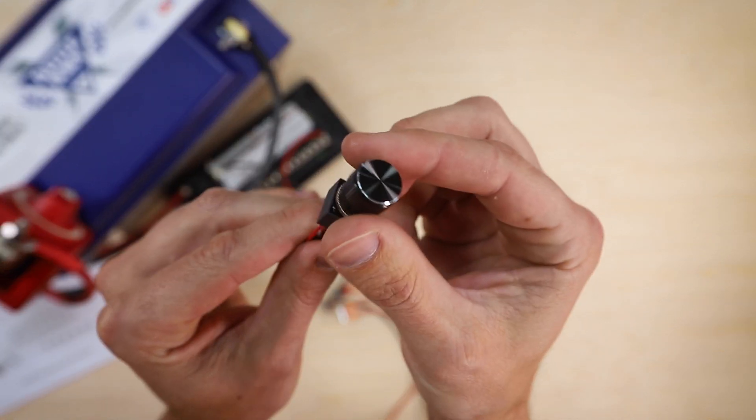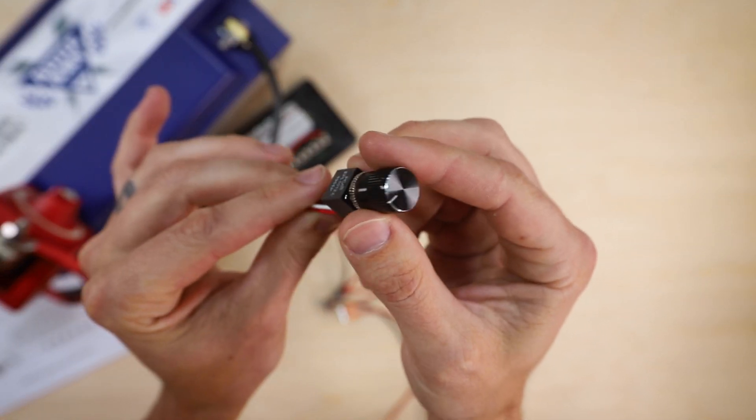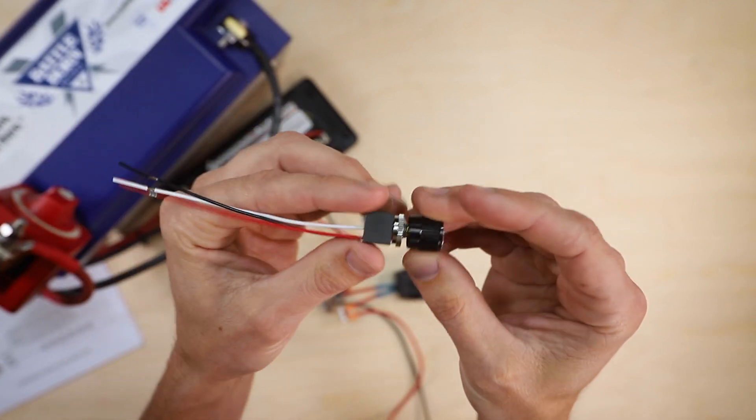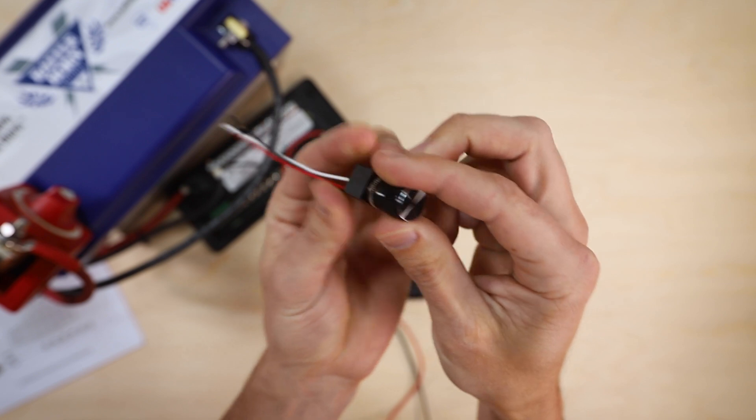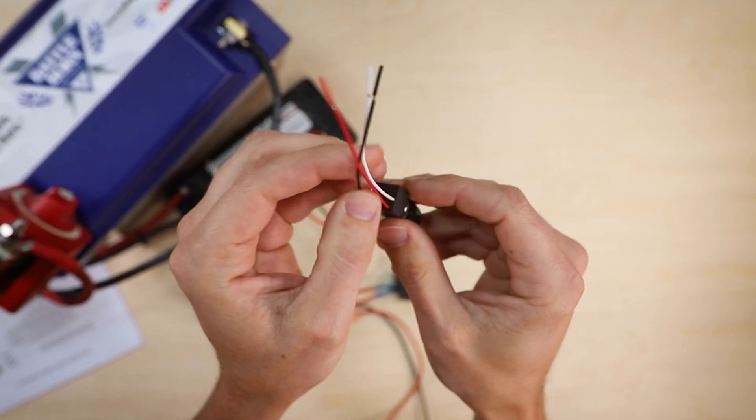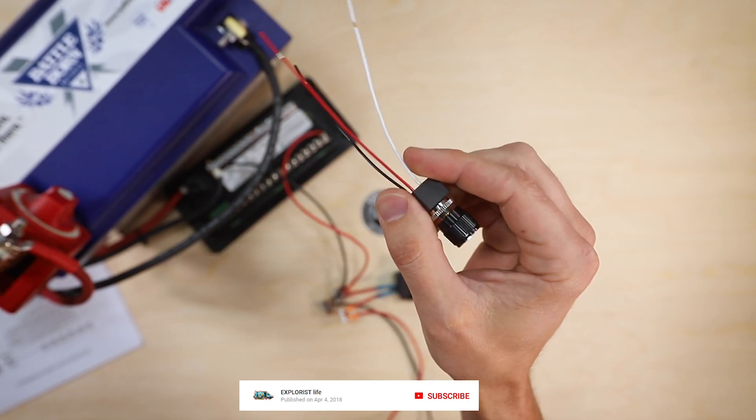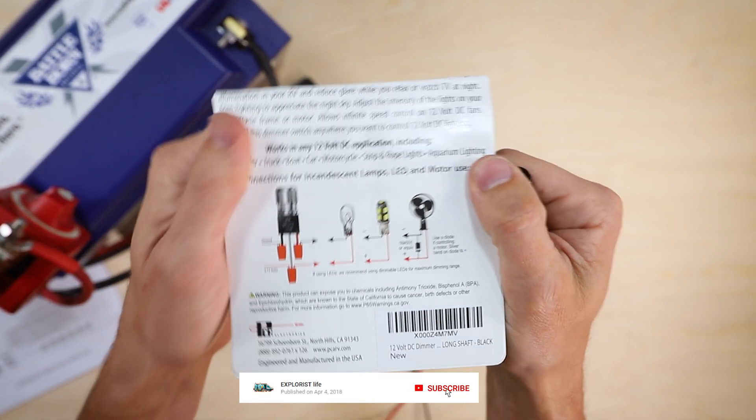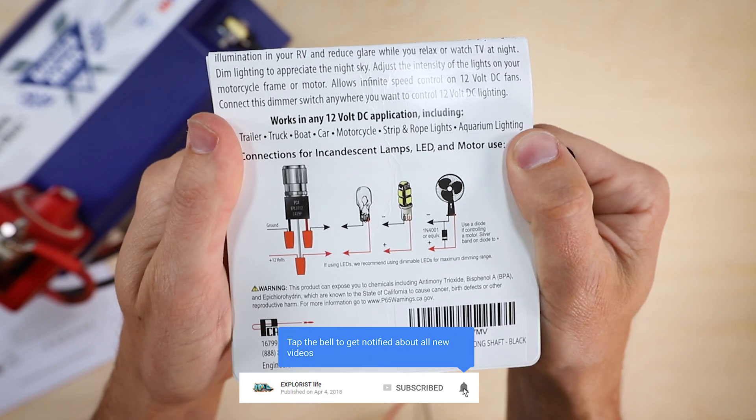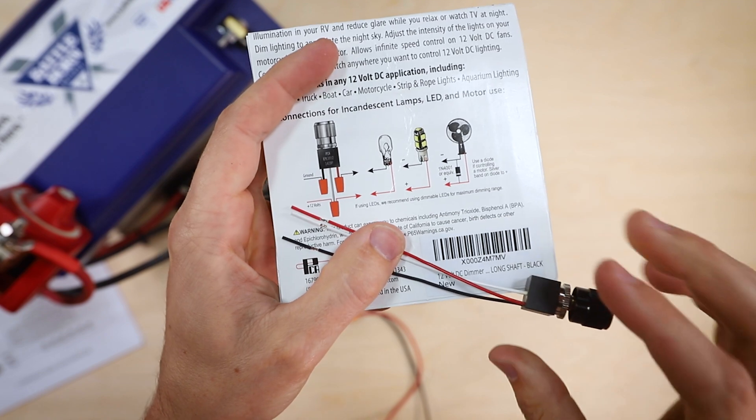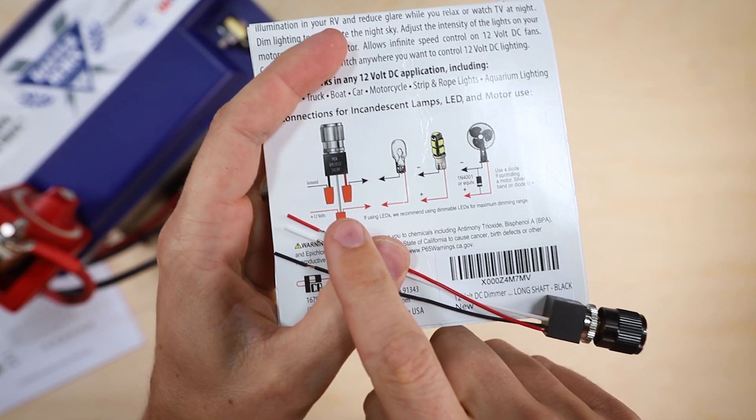This is the dimmer switch that we are going to be using in our build. And this is just a pretty common dimmer on Amazon. It just turns forward and backwards to dim the lights. Now it has three wires on the back: red, black, and white. And all of these dimmers are going to come with instructions. And this particular set of instructions is pretty nice. The hard part about this is that the colors are quite confusing.